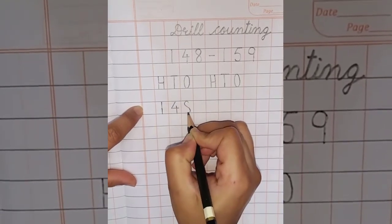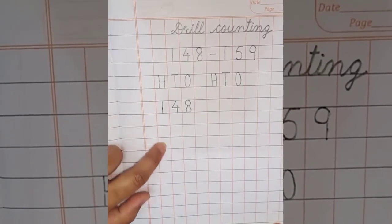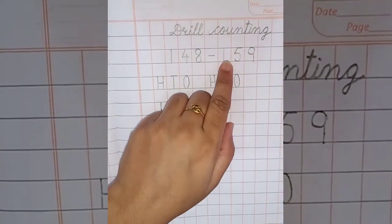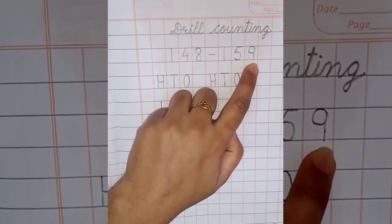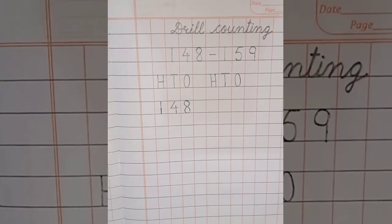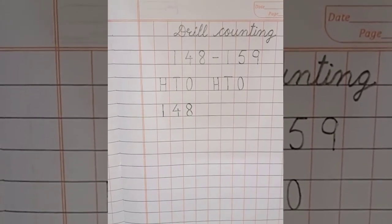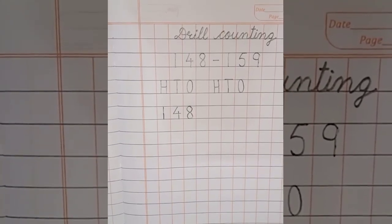148. In the same manner, continue the counting till 159. This time, you will not get help from your mama or any elder brother or sister. Okay? Go ahead. Goodbye.